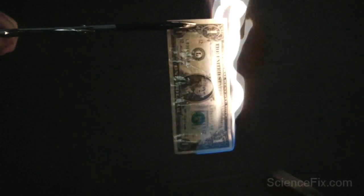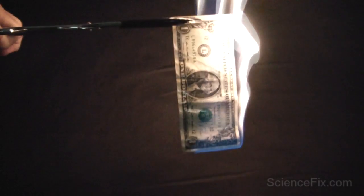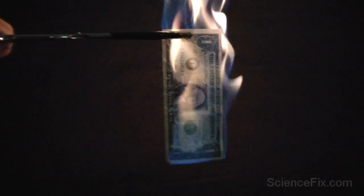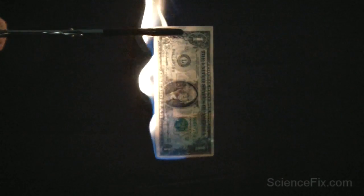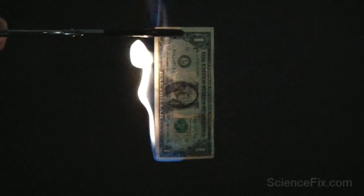It absorbs heat energy to do that. So the heat energy keeps the temperature down enough so that it doesn't reach the paper's ignition point. So the paper itself can't burn. All that energy is being absorbed by the process of the water going from a liquid to a gas.